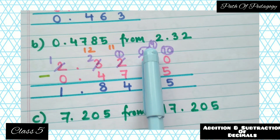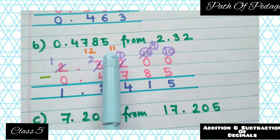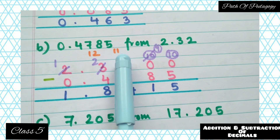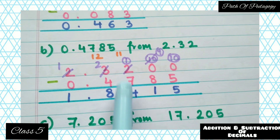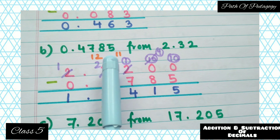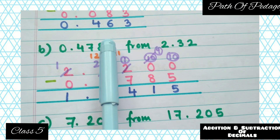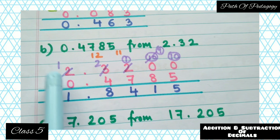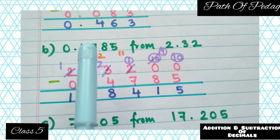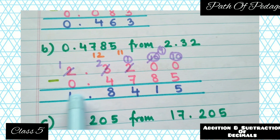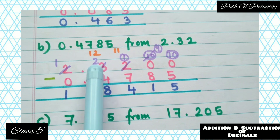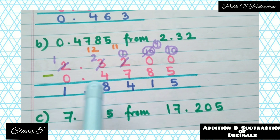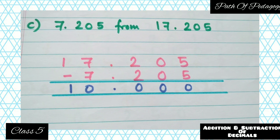We borrowed one, so the 2 becomes 1; but 1 is smaller than 7, so borrow again to make it 11; 11−7=4. We borrowed from the 3, so 3 becomes 2; but 2 is smaller than 4, so borrow again to make it 12; 12−4=8. Give the decimal point; we borrowed from the 2, so it becomes 1; 1−0=1. The answer is 1.8415.